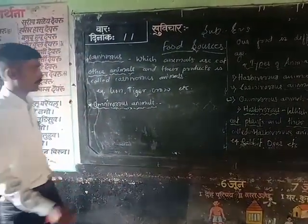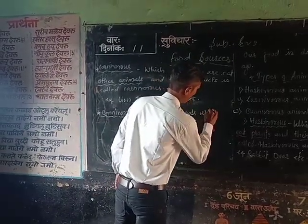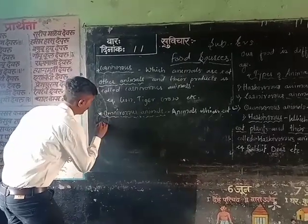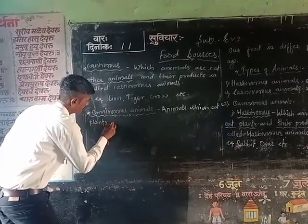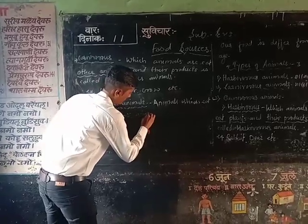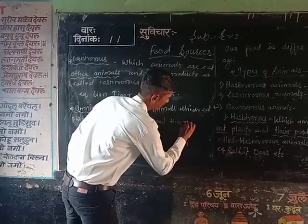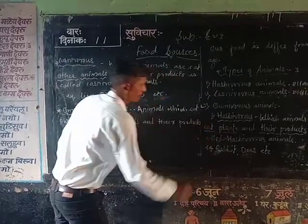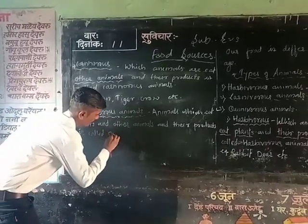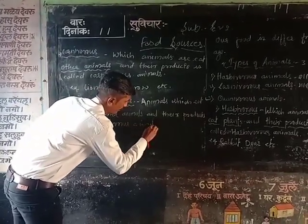So what is the definition of omnivorous animals? Animals which eat plants and other animals and their products are called omnivorous animals.